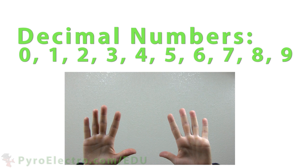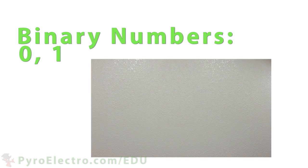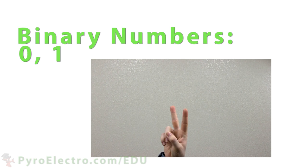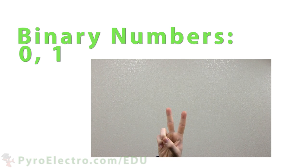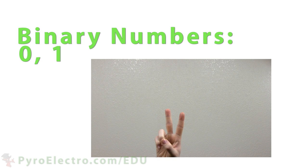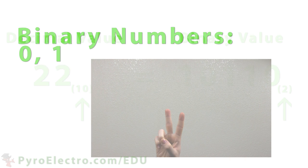And since humans have ten fingers, it makes perfect sense that we would prefer counting to ten. However, where the decimal number system consists of ten numbers, zero to nine, the binary number system consists of only two numbers, zero and one. So we call this a base two number system.